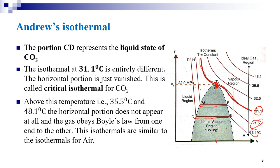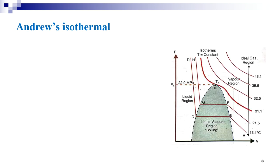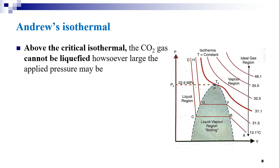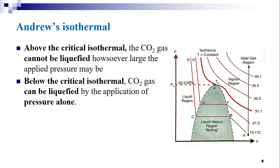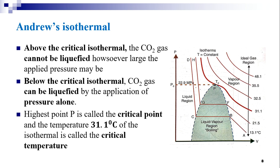The highest point P is called the critical point and the temperature 31.1°C of the isothermal is called the critical temperature. From this, we conclude that it is not possible to liquefy a gas above the critical temperature.